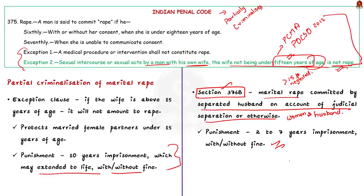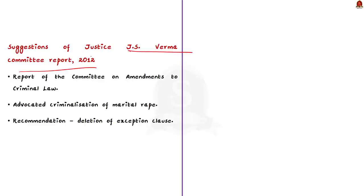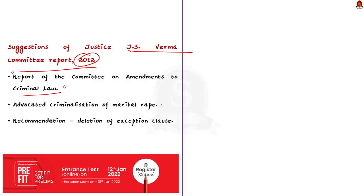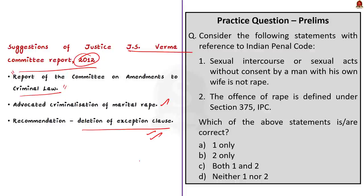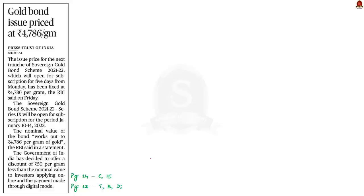While dealing with these petitions, the court should remember the suggestion given by the Justice JS Verma Committee formed in 2012. The committee's report, called the Report of the Committee on Amendments to Criminal Law, advocated criminalization of marital rape and recommended deleting the exception clause under Section 375. We can conclude that marriage does not mean irrevocable consent for sexual intercourse, and a regressive act like marital rape cannot be used to ensure the stability of marriage.